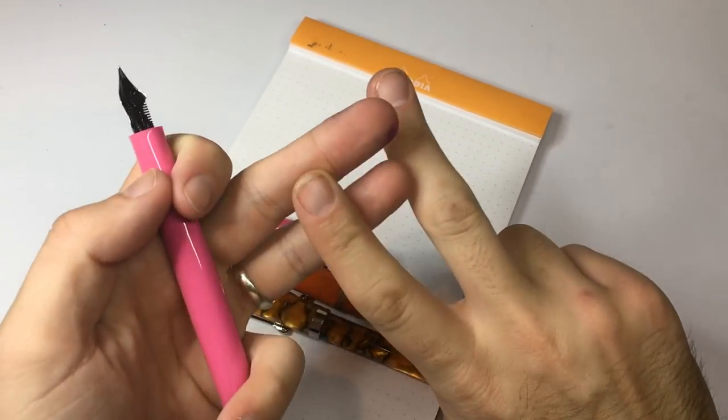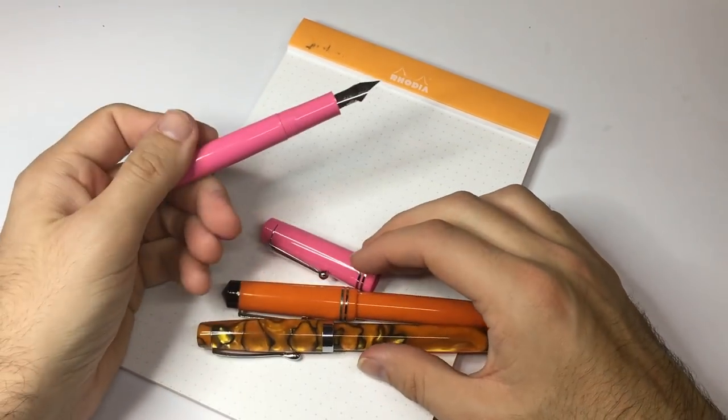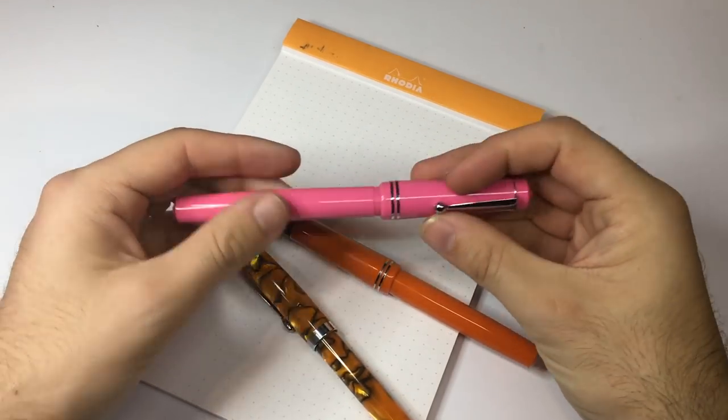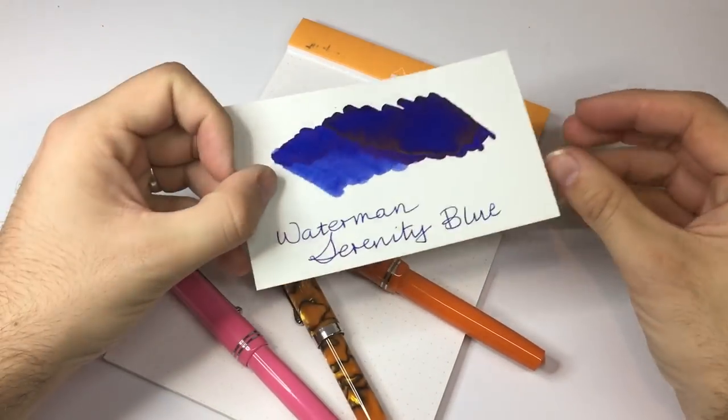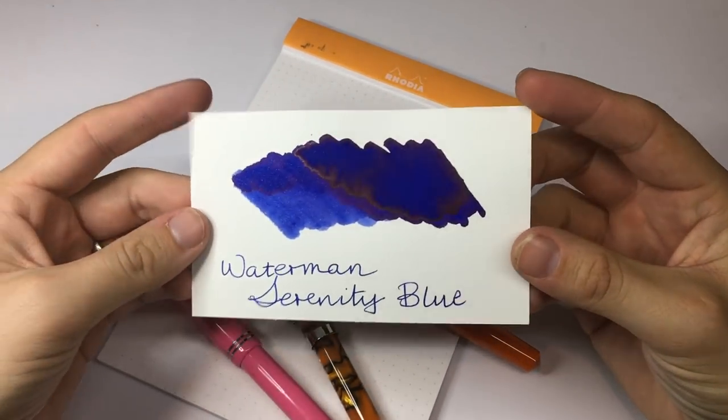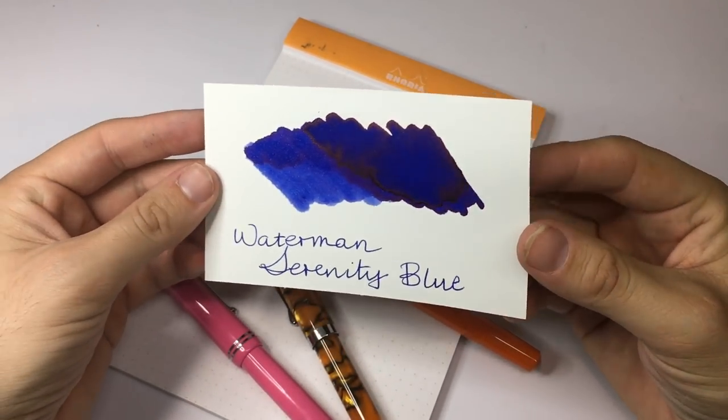And then the sides are cut out to allow for less material so that the flex of the nib, the tines, can really open up off the paper there. So I've inked all three of these pens with Waterman Serenity Blue.